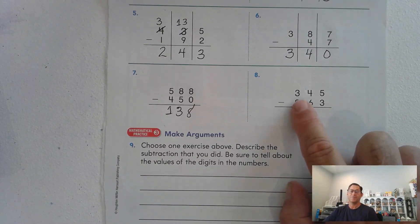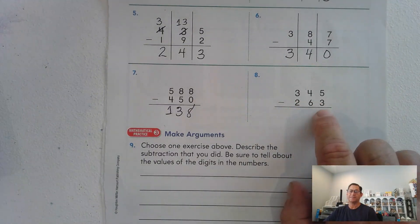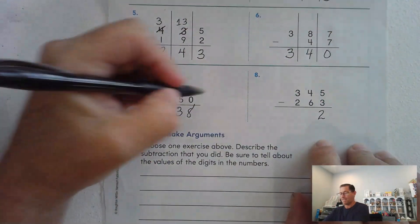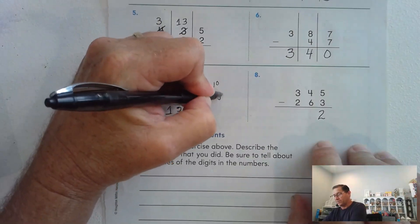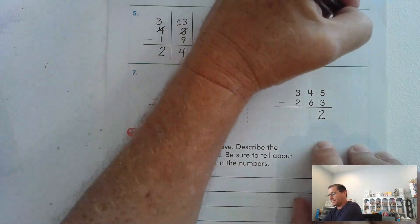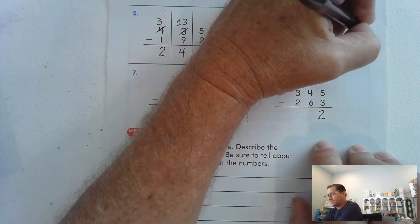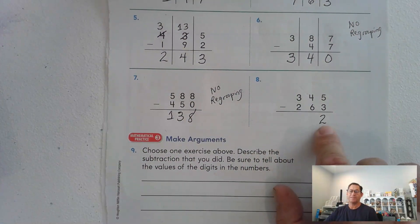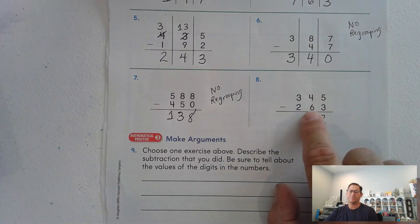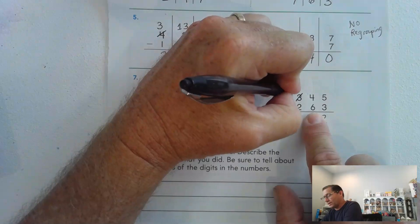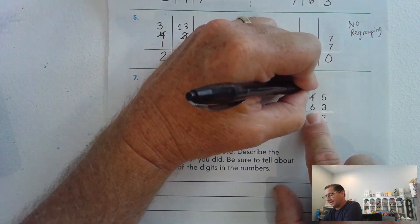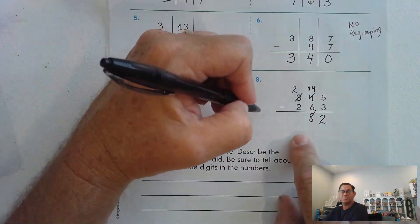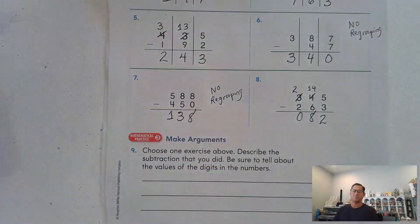Number five-eight: 345 take away 263. By the way, we didn't have to regroup at all in number seven or number six. For this one, 5 take away 3 is 2, but I have 4 tens and I have to take away 6 tens — we can't. So take one of the 3 hundreds and trade it for 10 tens. 14 tens minus 6 tens is 8 tens. 200 minus 200 is 0. Answer: 82.